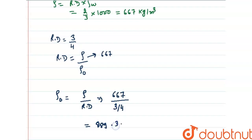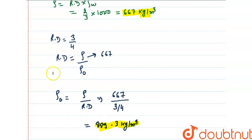So our first answer is 667 kg/m³ for the density of the wood, and the second answer is 889.3 kg/m³ for the density of the oil.